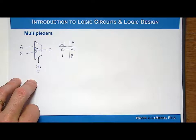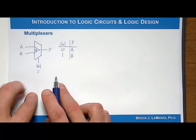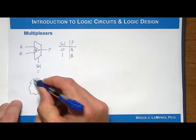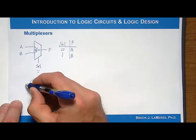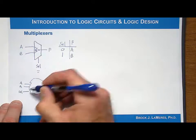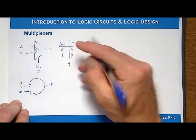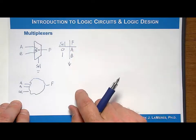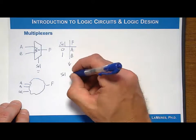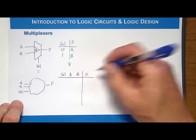Let's look at how you would go about designing this. A, B, and select are the inputs into the combinational logic circuit, which produces F as a scalar output. One of the things we can do to get the truth table into a more recognizable form is to list select, A, and B in the truth table, and then write what F is going to be.